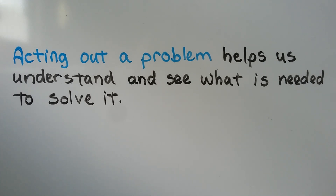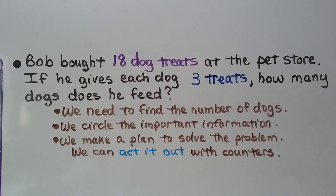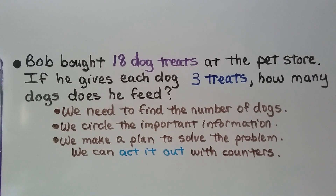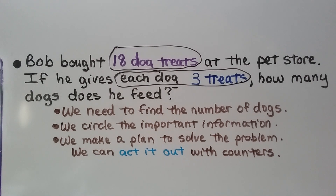Acting out a problem helps us understand and see what is needed to solve it. Bob bought 18 dog treats at the pet store. If he gives each dog three treats, how many dogs does he feed? We need to find the number of dogs. We need to circle the important information — he has 18 dog treats and each dog gets three treats. We make a plan to solve the problem — we can act it out with counters.